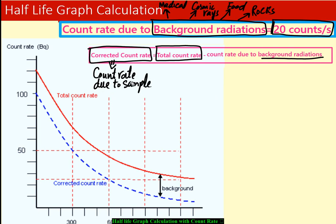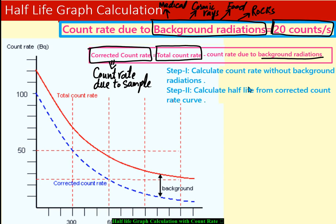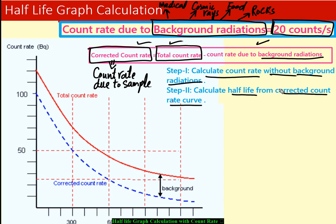To calculate half-life when background radiation is present, just follow two steps. Step one: calculate the count rate without background radiations using the formula — total count rate minus count rate due to background radiations. Step two: calculate half-life from the corrected count rate curve.